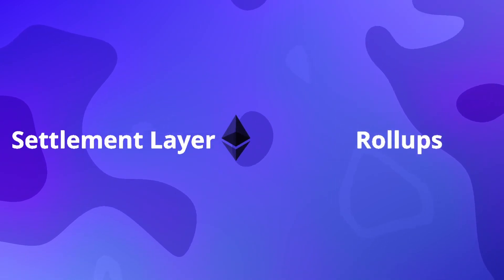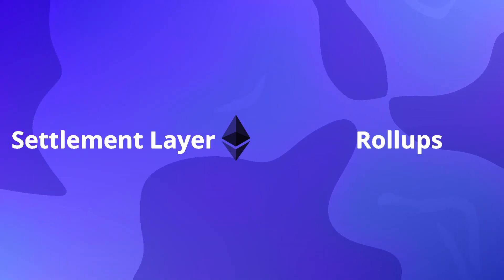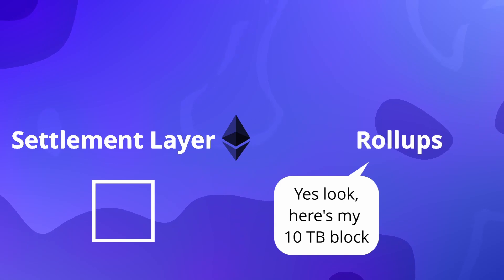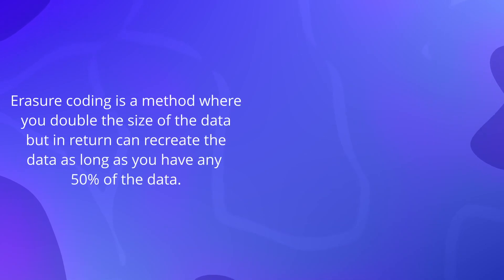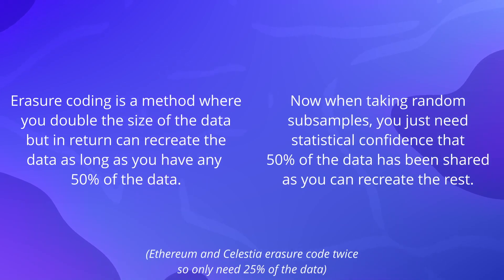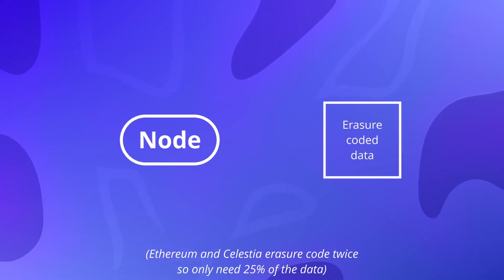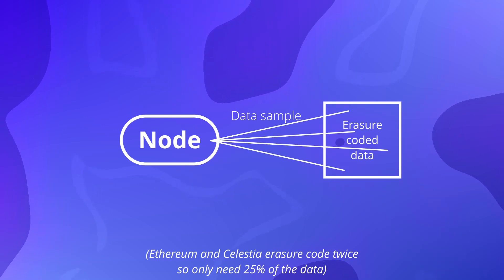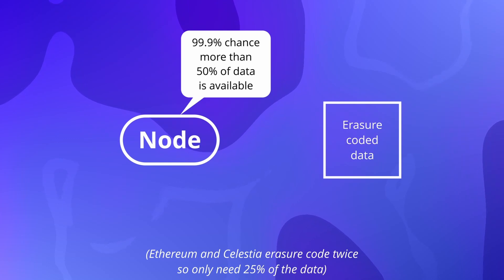However, the only thing nodes want to know is if the rollups have made the data available. They don't actually want to download and store the data for the rest of time, as that uses up a lot of storage and bandwidth — it's just that that is the simplest way to implement it currently. This is why projects like Celestia and Ethereum with Dank Sharding have started to use methods like erasure coding, along with data sampling, to create a way for nodes to be able to confirm that rollups have made all the data available, without each node needing to download all the data themselves. Instead, the combination of erasure coding along with sampling the data allows nodes to be statistically confident of the data being available, without them having to download it all.